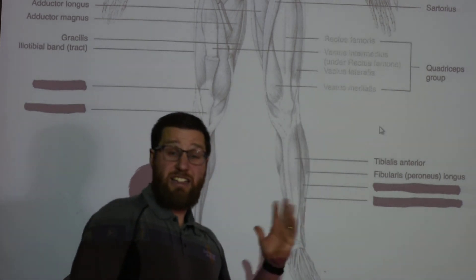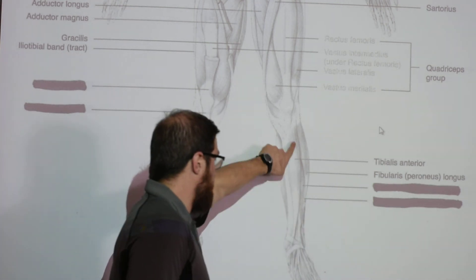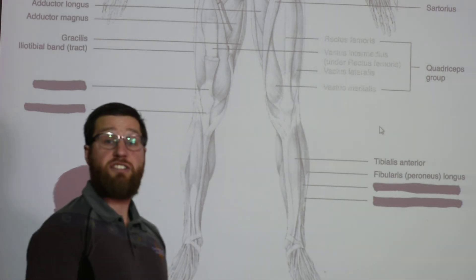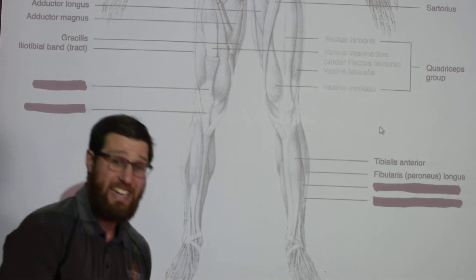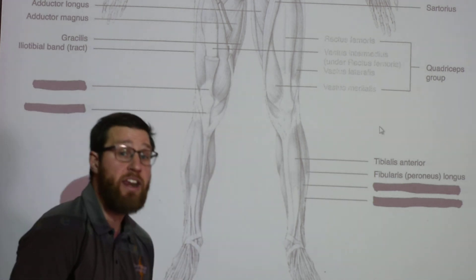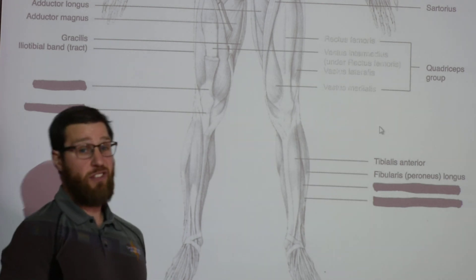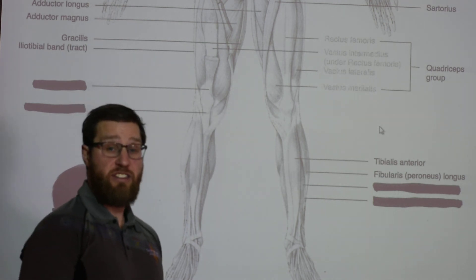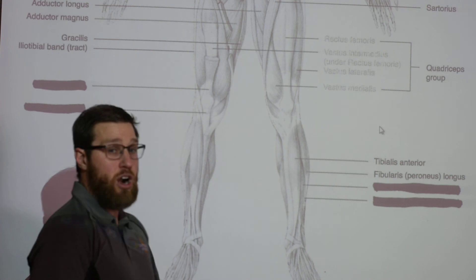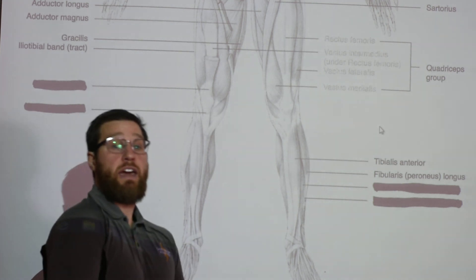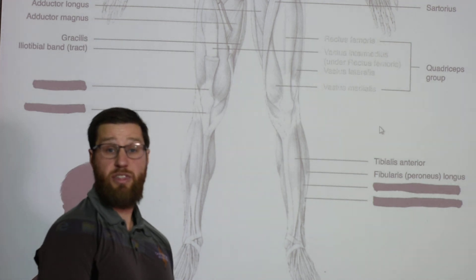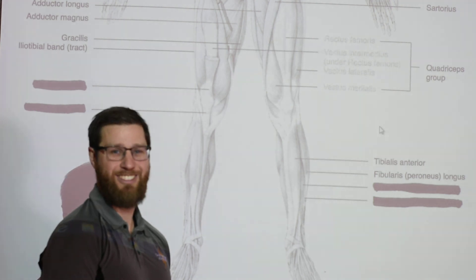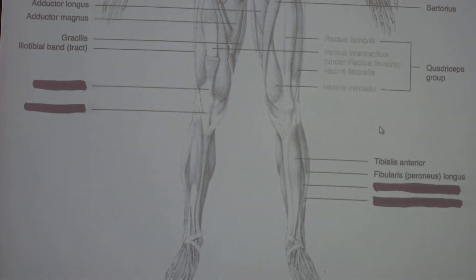You can tell where the fibularis longus is on the lateral side — when you contract it, it pulls on your foot and attaches to your tibia as well. You are a walking textbook; you have all of these muscles in your body and can move them, flex them, and in some cases feel where they are. The best way to study these muscles is to look at the chart, know what they do, move them, and go through them in your mind. Hope this helps — we'll see you on the posterior side!